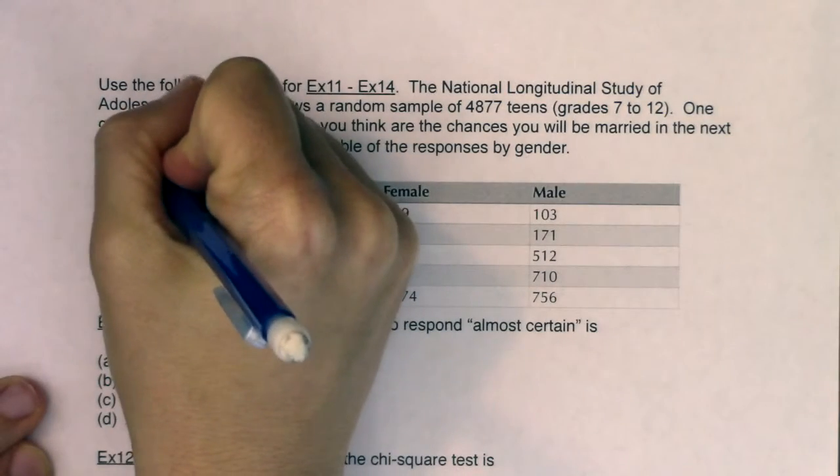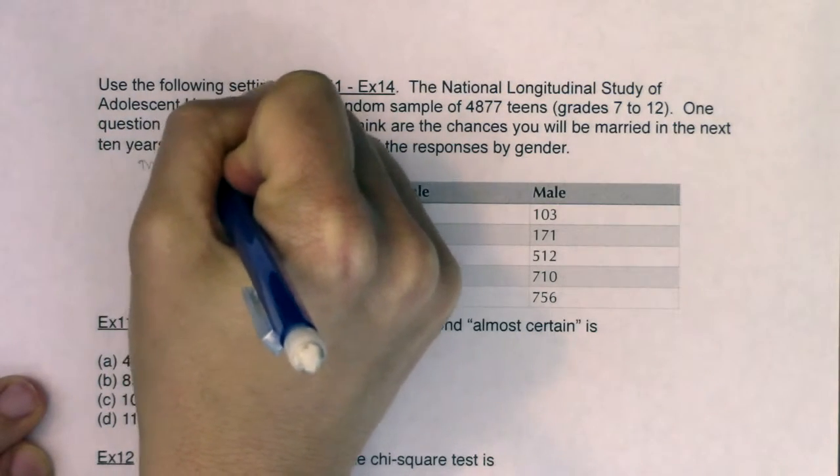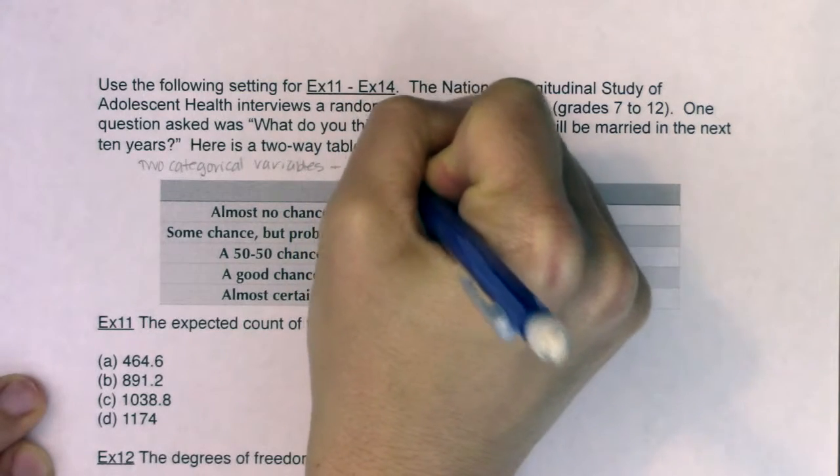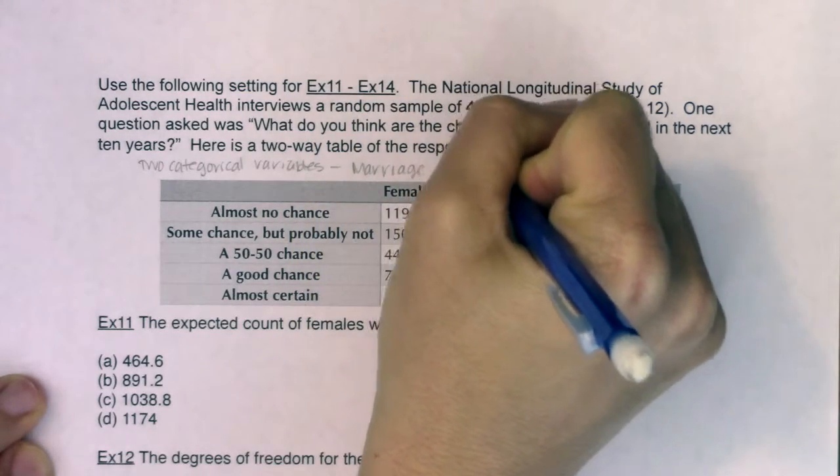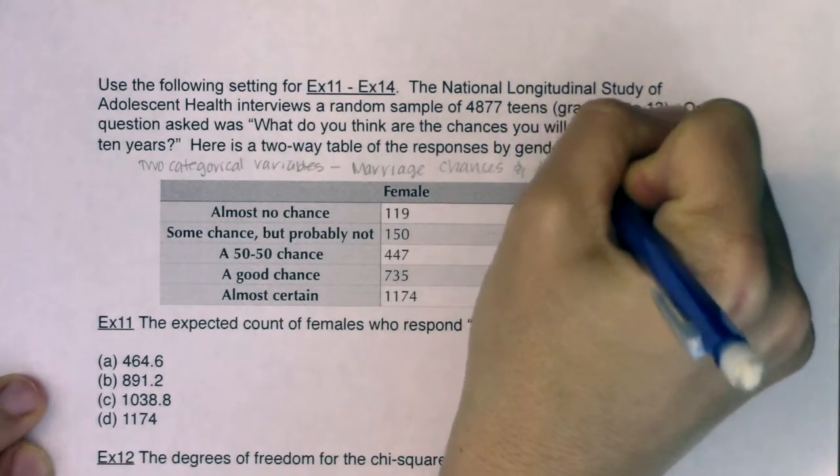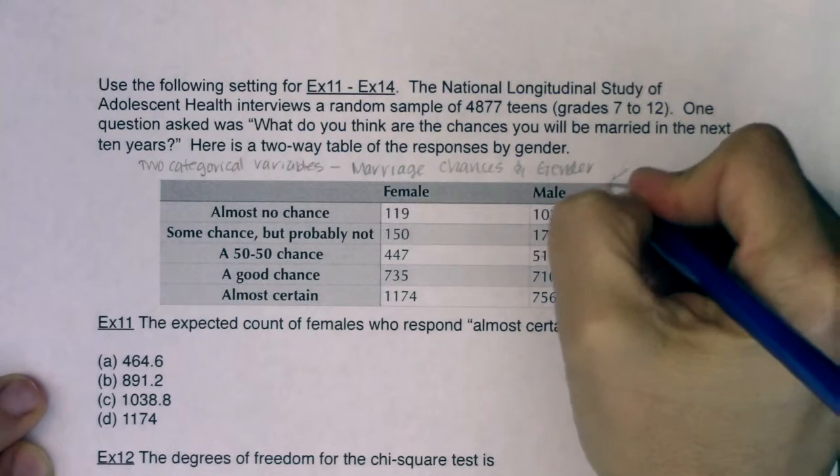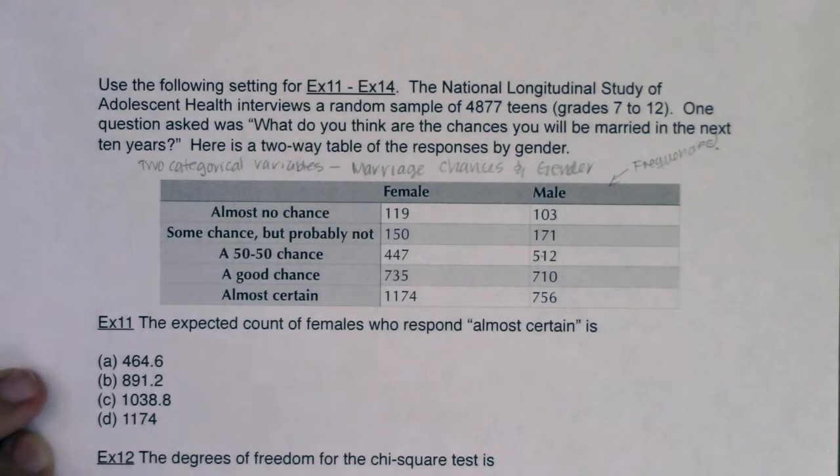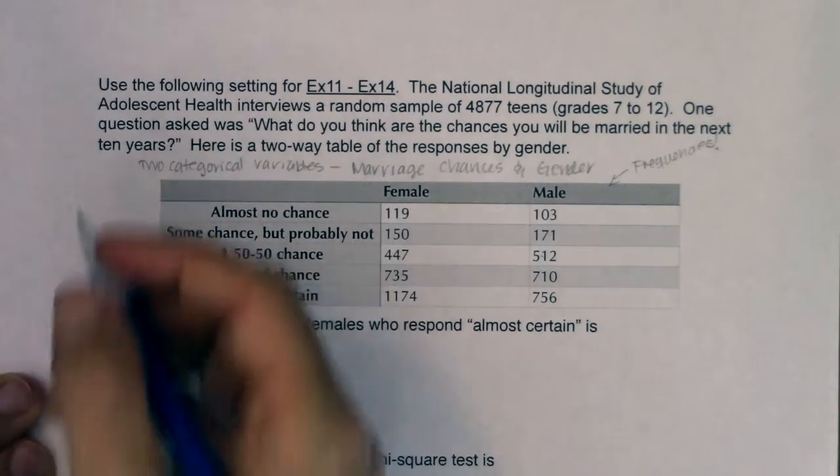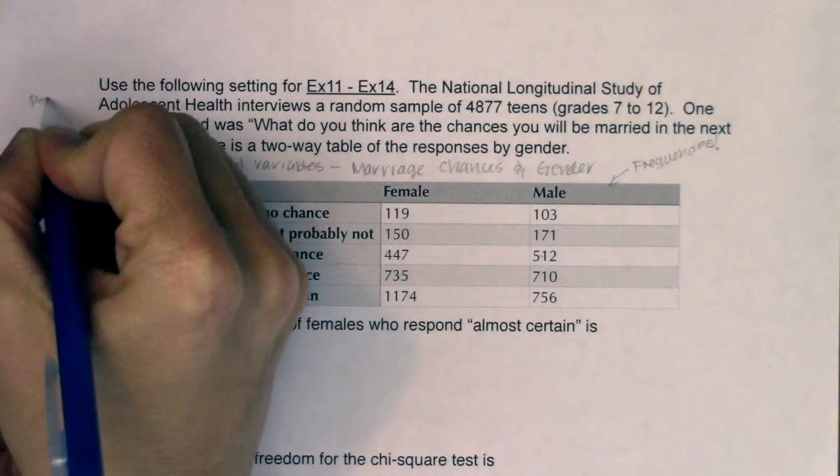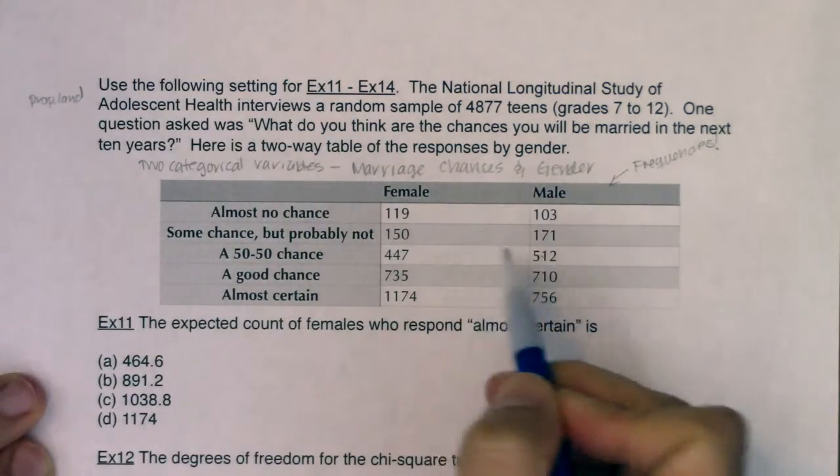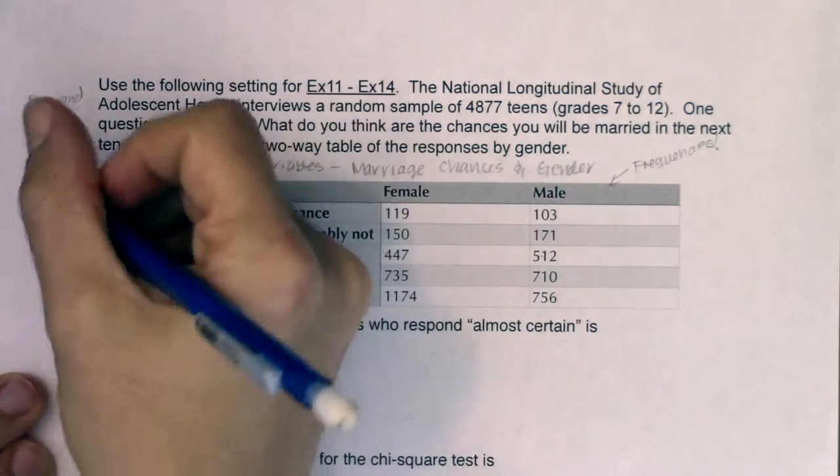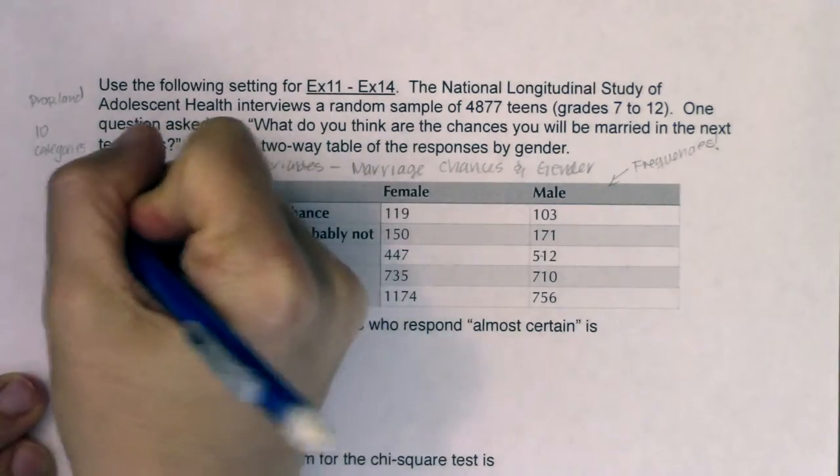So I can hear there are two categorical variables. I'll just call them generically marriage chances and gender. Another thing I see is a bunch of frequency counts. I see a ton of frequencies. Whenever I see frequencies, I get suspicious. I'm likely to be turning those into relative frequencies. So ultimately, for this problem, we're in prop land. I've actually got 10 categories. 10 categories. And whenever I'm above two, when I'm at three or more, I know I'm going chi-squared. So I'm going to be doing some kind of chi-squared test.